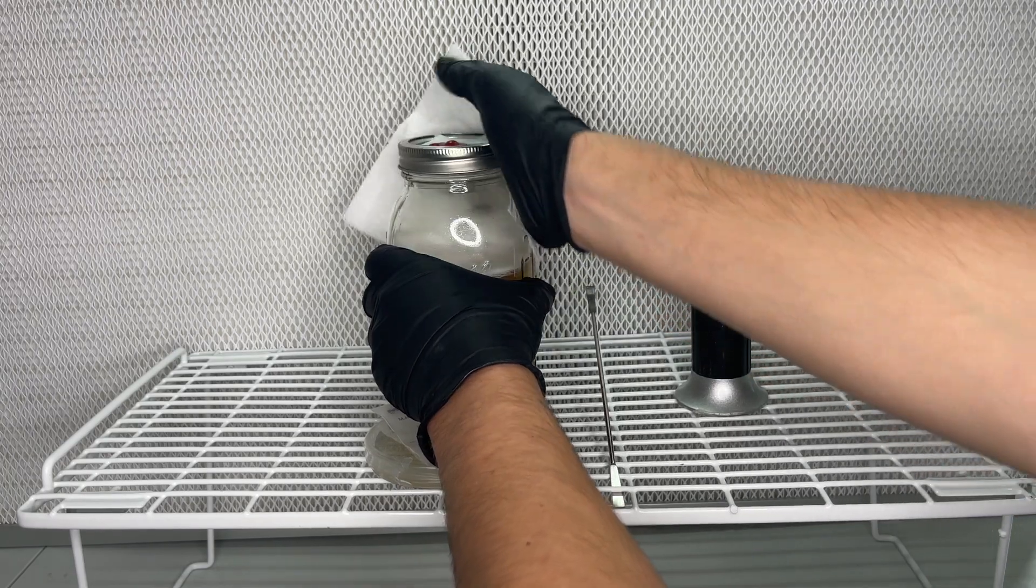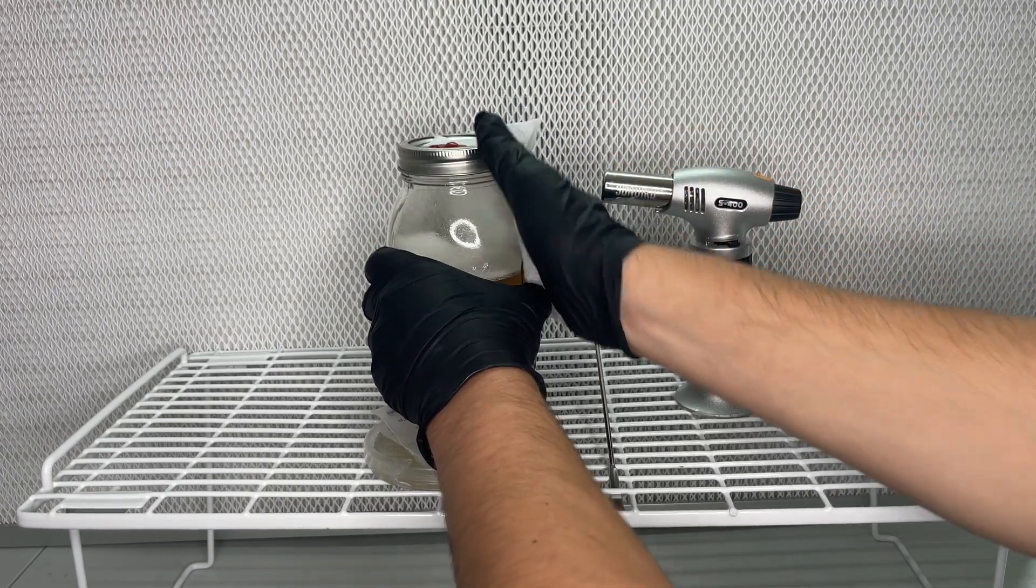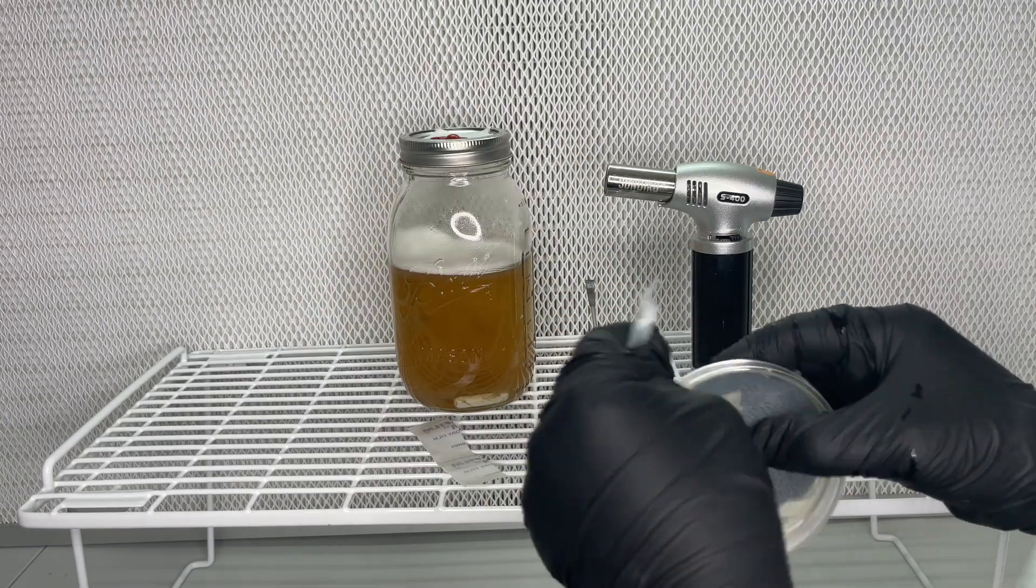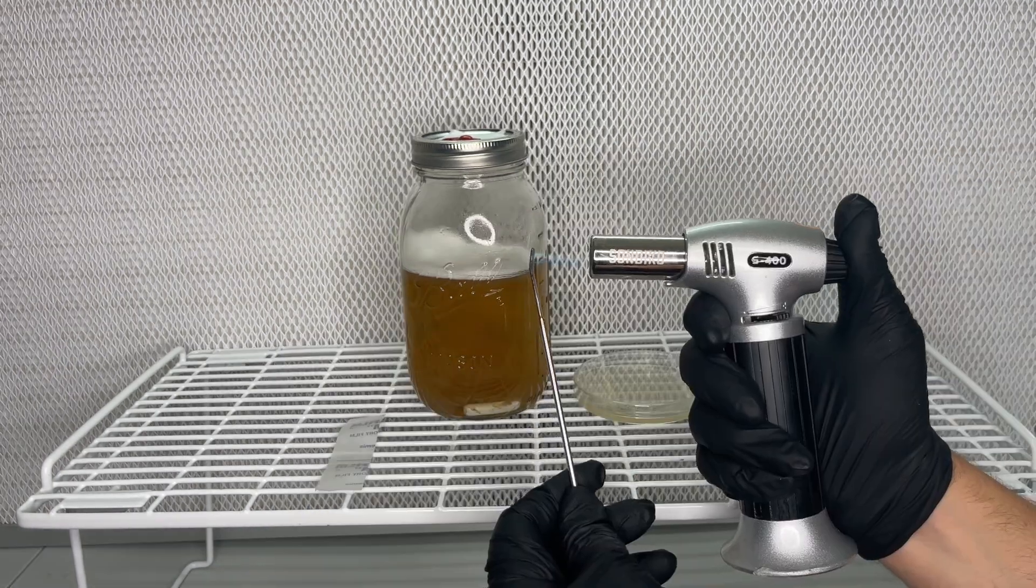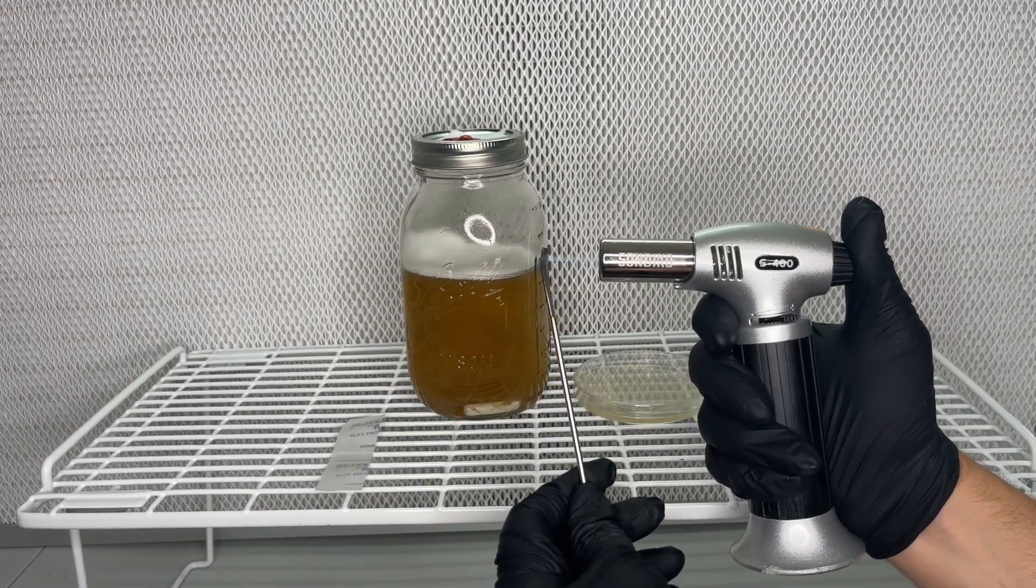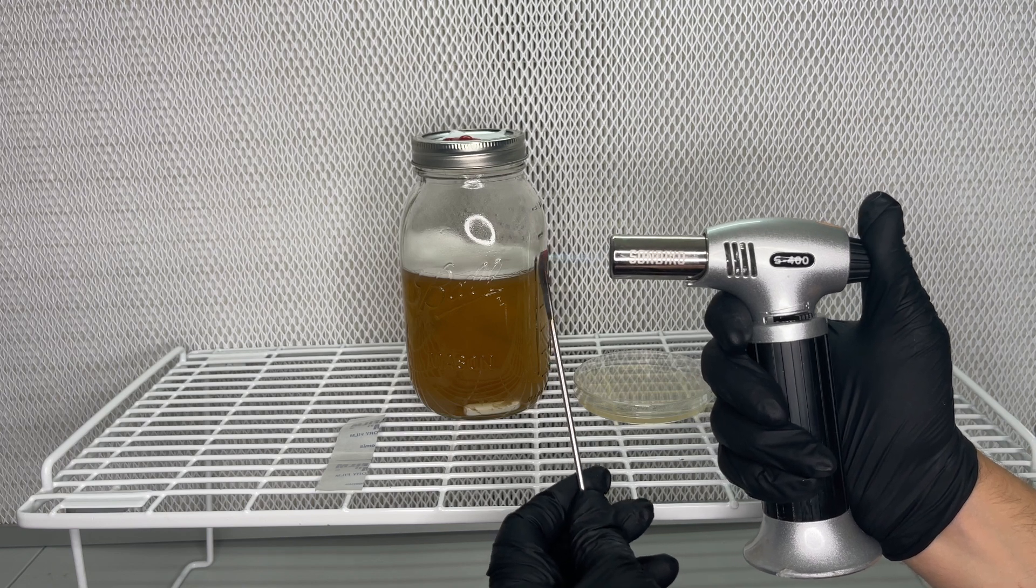And although we know that the liquid culture is contaminated, the mycelium growing up the side of the glass, away from the contamination, will allow us to actually isolate the mycelium on an agar plate.